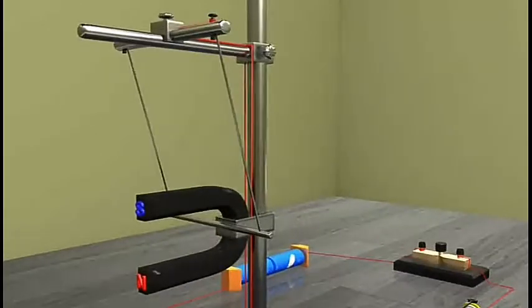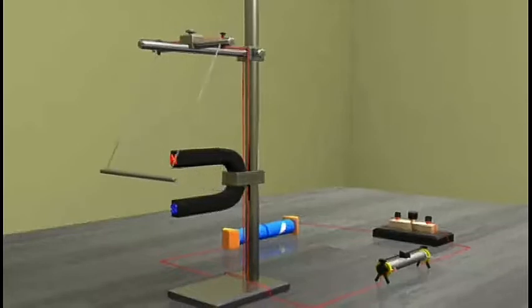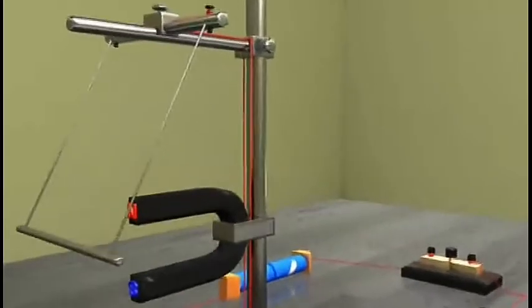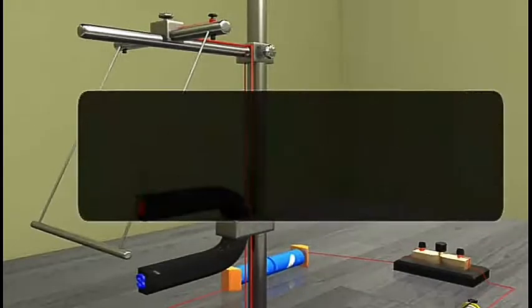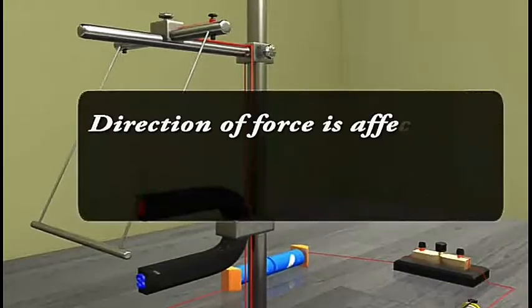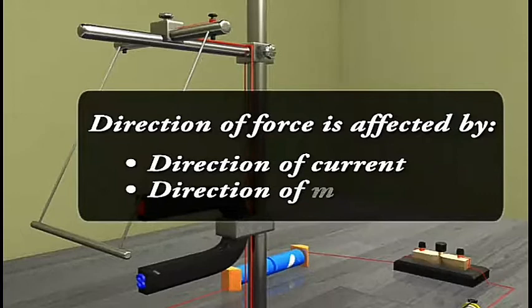Let us now check the effect on changing the direction of the magnetic field. If we reverse the position of the horseshoe magnet by interchanging the two poles of the magnet, the direction of the force acting on the conductor again gets reversed. This shows that the direction of the force on the conductor depends on both the direction of the current as well as the direction of the magnetic field.